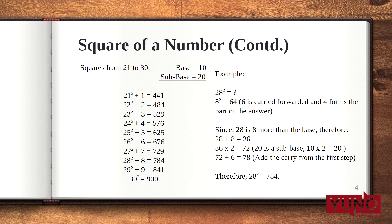Now, 36 is multiplied with 2 because 20 is a sub base. That gives us 72. Now, 6 is carried from the ones place. Hence, 72 plus 6 gives us 78. So, the square of 28 is 784.